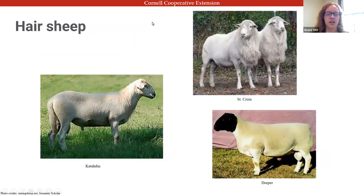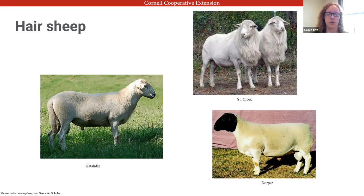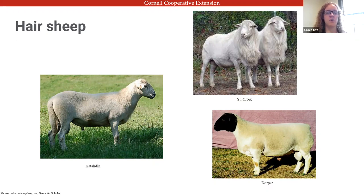Additionally, there are breeds of sheep called hair sheep — they don't grow wool at all. The advantages of hair sheep, and why they're becoming more popular, are that they're a lot hardier and more tolerant of warmer climates. The St. Croix originated in the Caribbean. These breeds are also more parasite resistant, which is really important since small ruminants have so many parasite problems.